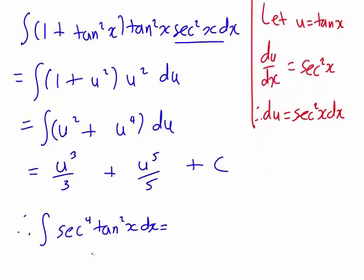This is what we were wanting to work out originally, the integral of sec to the power of 4x times tan squared x dx. We now know that this is u cubed divided by 3, so that's tan cubed x divided by 3, since u was tan x, plus tan to the power of 5 x on 5, and then plus c.